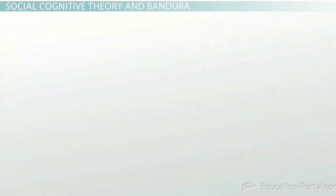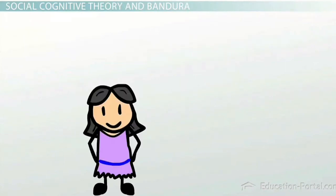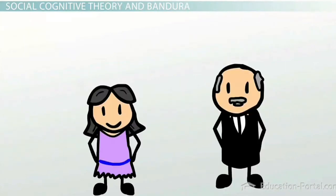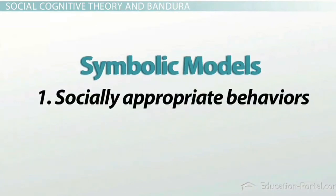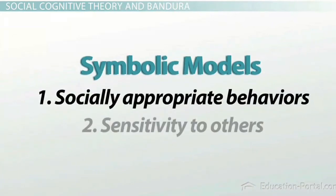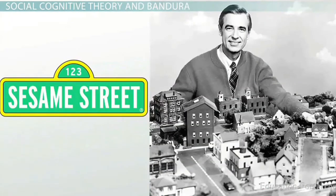The third influence of modeling is to demonstrate new patterns of behavior. Models are particularly important in the socialization of both children and adults. Language, social values, and family customs, as well as educational, social, and political practices are modeled in countless situations. Examples for children of symbolic models that portray both socially appropriate behaviors and sensitivity to others are Sesame Street and Mr. Rogers' Neighborhood.